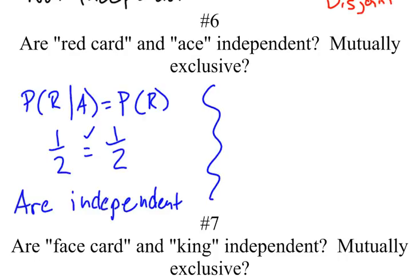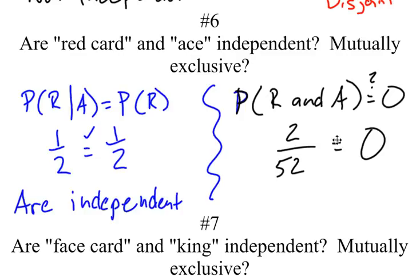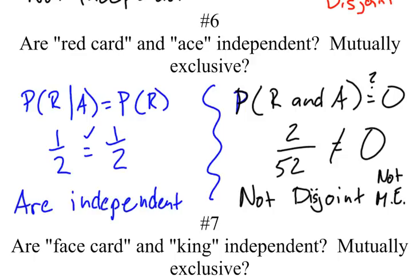Now, what about mutually exclusive? Is the probability of having a red card and an ace equal to zero? No — we know there are some red cards that are also aces. The probability of a card that is both red and an ace is two out of 52. Is two out of 52 equal to zero? No. So red card and ace are not disjoint — they are not mutually exclusive. You've got to know the difference between the two and how to check for each.